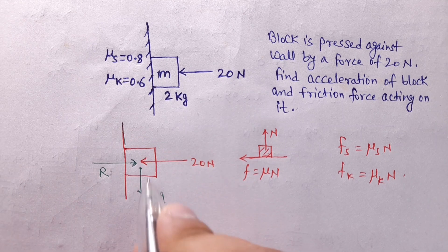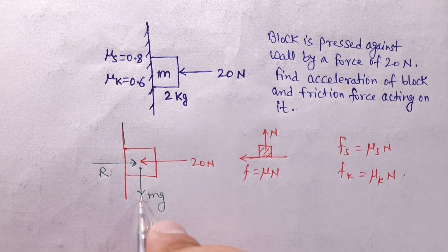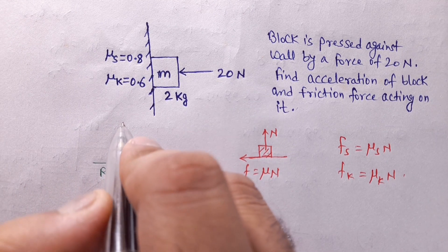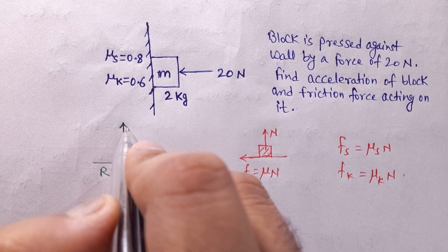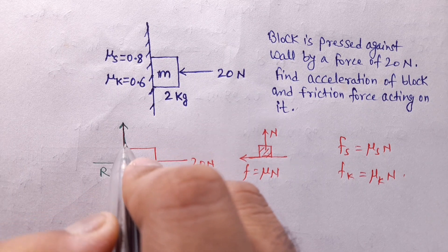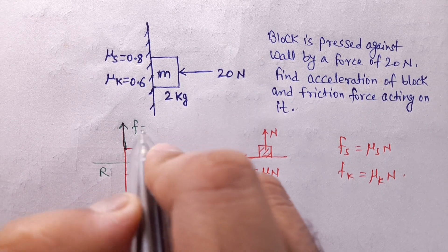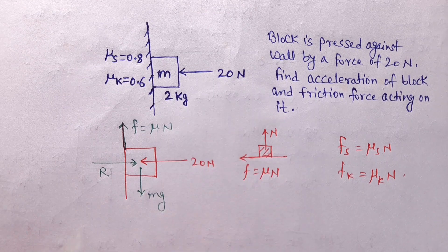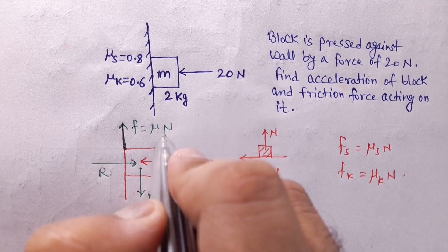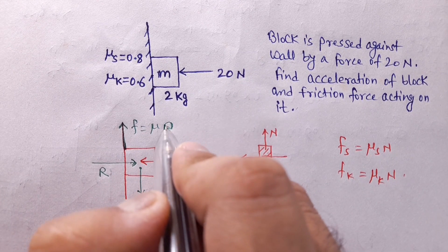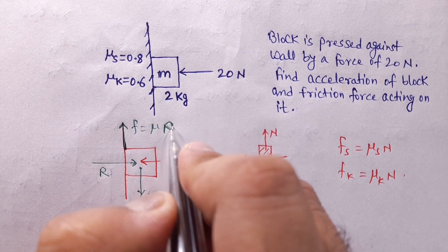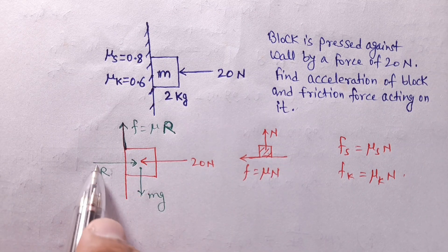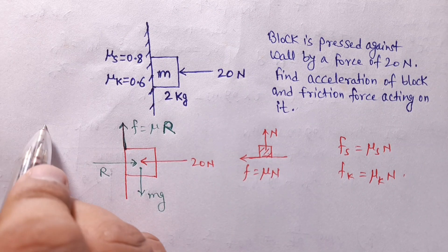The friction force direction depends on whether the block tends to slide. If the block tends to slide, friction acts to oppose that tendency, and the friction force equals μ × R (normal reaction). First, we balance the horizontal forces.